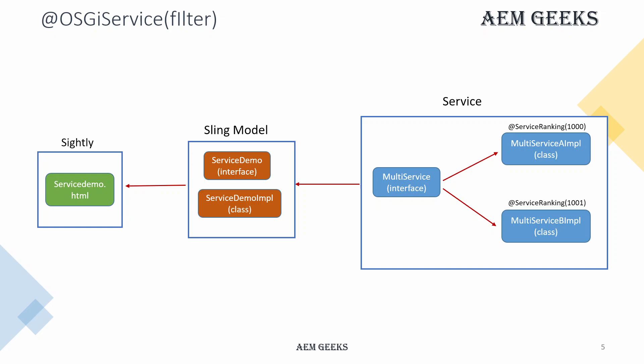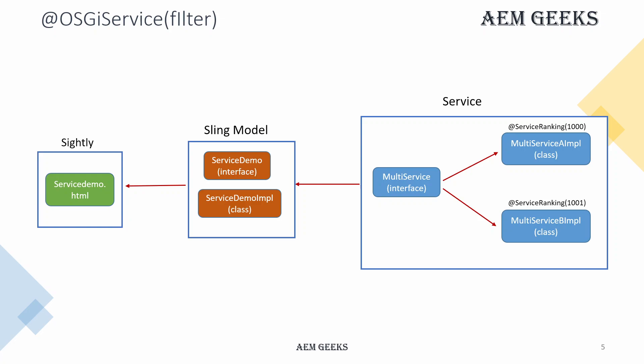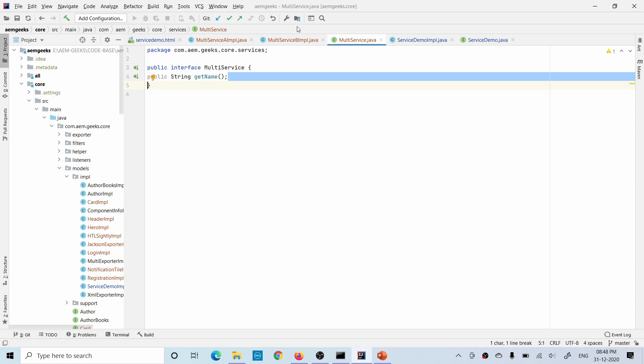Suppose in some scenarios I want a specific class to be called sometimes and another class other times. With service ranking, every time the higher-ranked implementation is called. But if I sometimes want method from class A and sometimes from class B, I can call these services using a filter. I use the @OSGiService annotation with a filter parameter, and in that filter I give the component name. Don't worry, I'll show you — at the end of this tutorial you will understand everything with a proper demo.